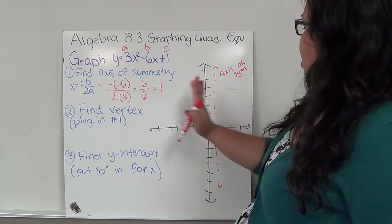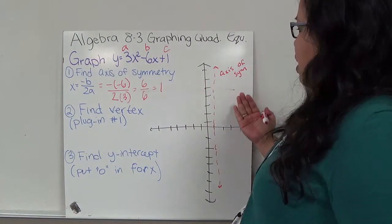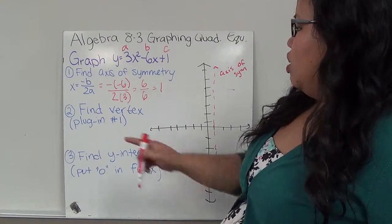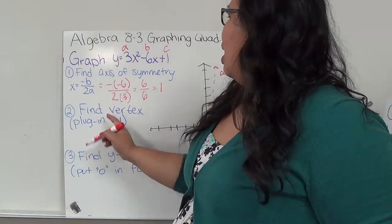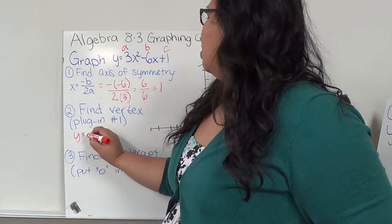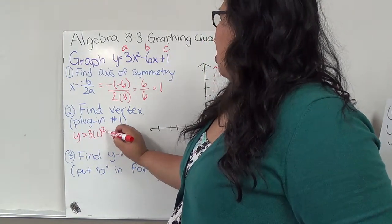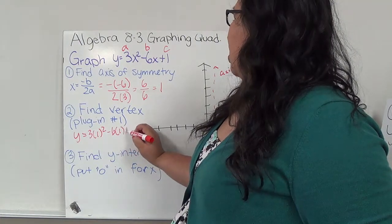So that means whatever is on this side is going to mirror whatever is on this side. So number 2, it says to find the vertex. So what I'm going to do is I'm going to take number 1, and I'm going to plug it into the equation to find what Y is. So Y equals 3 times 1 squared minus 6 times 1 plus 1.